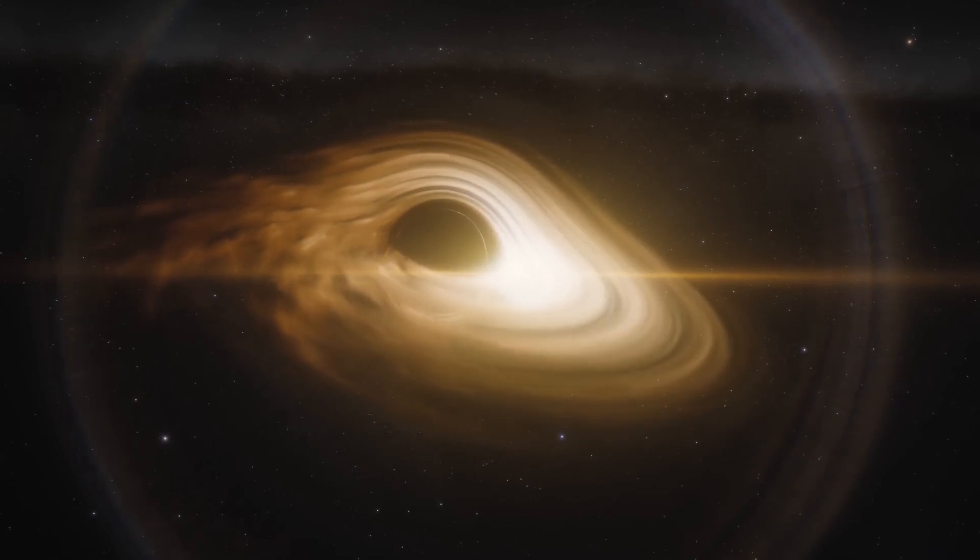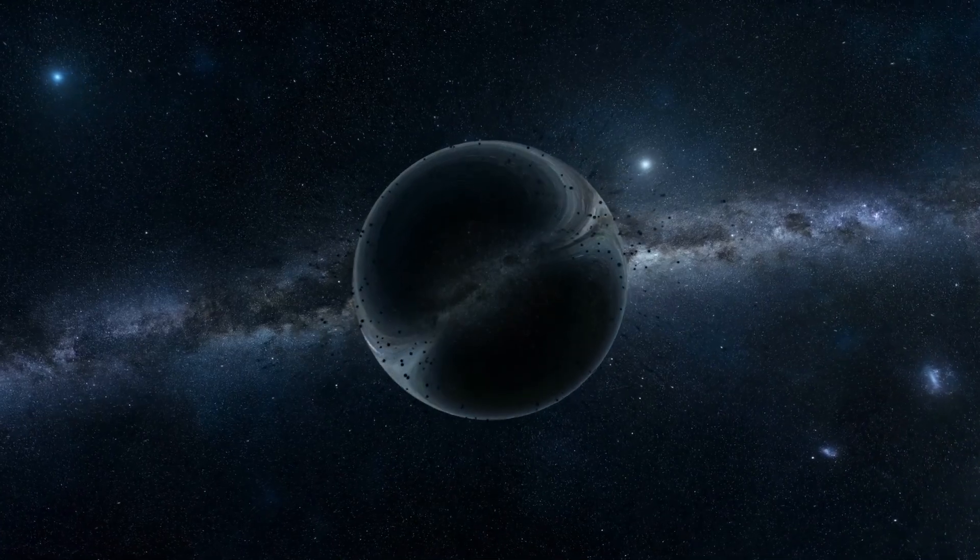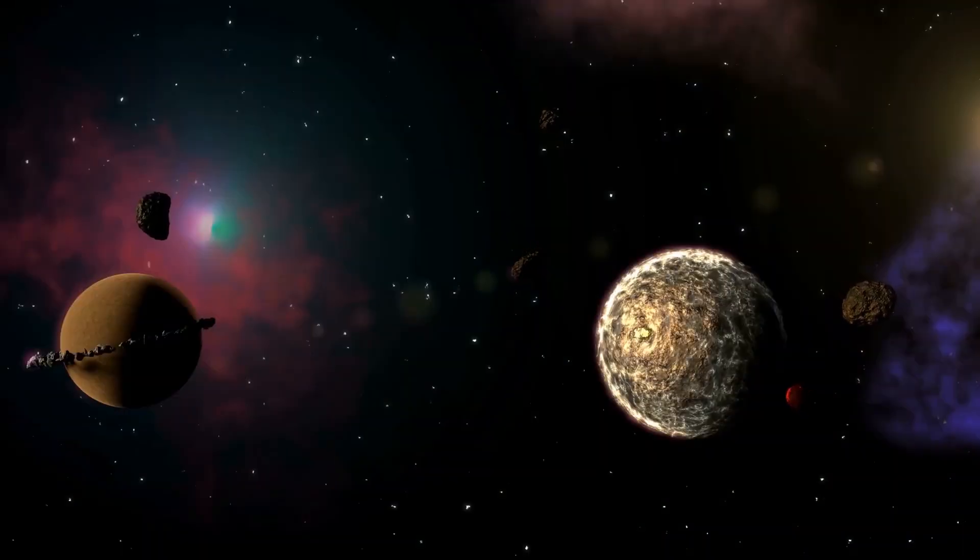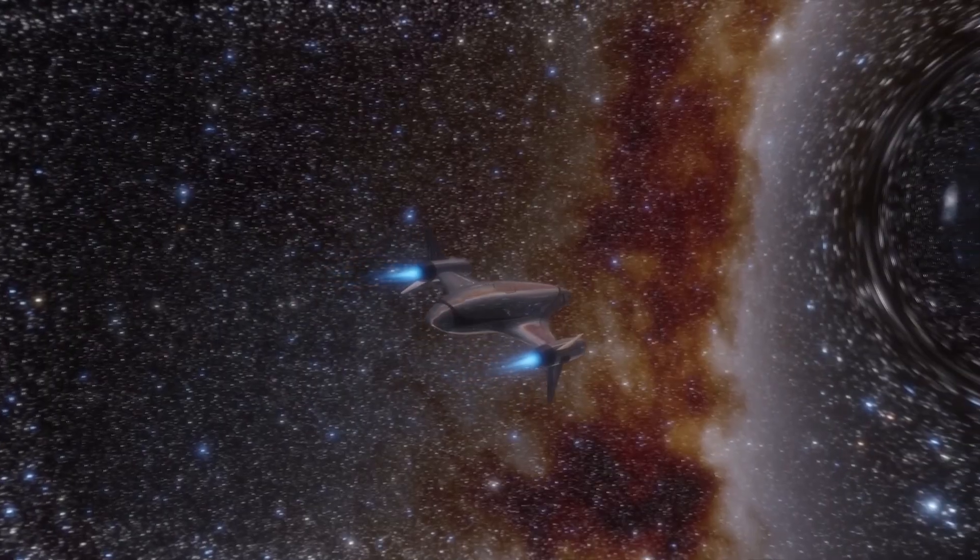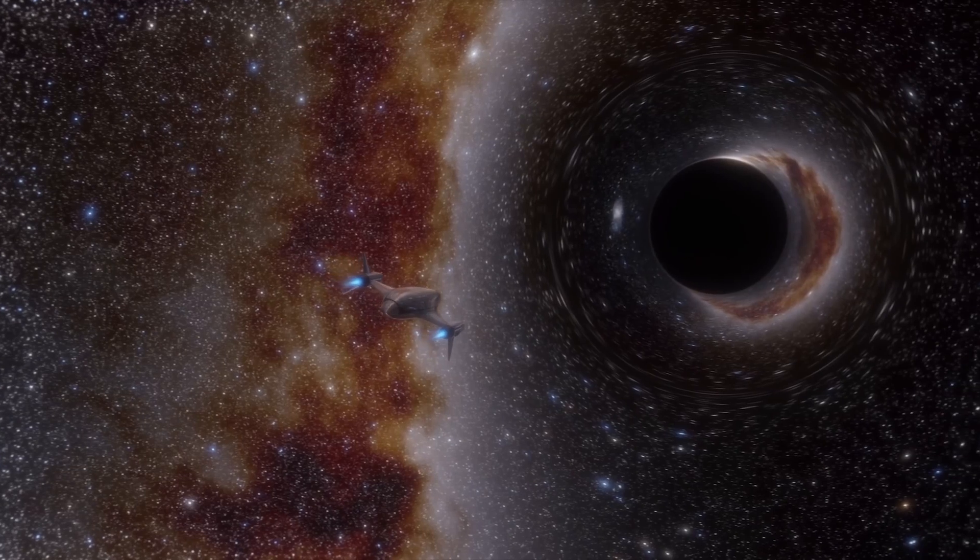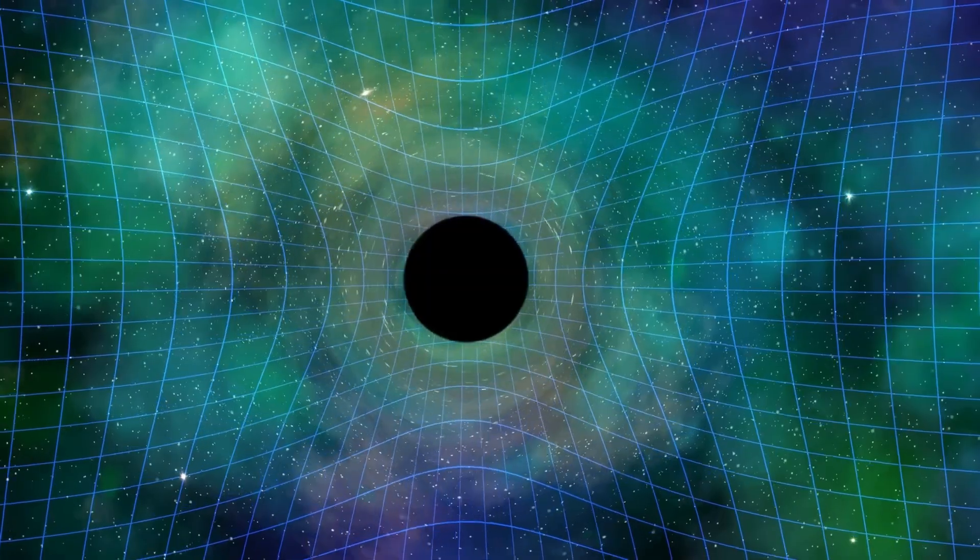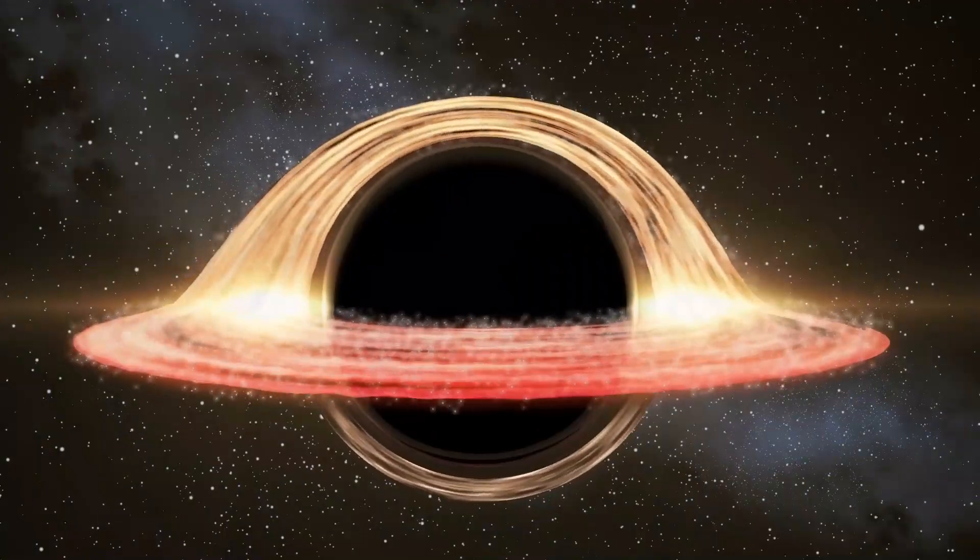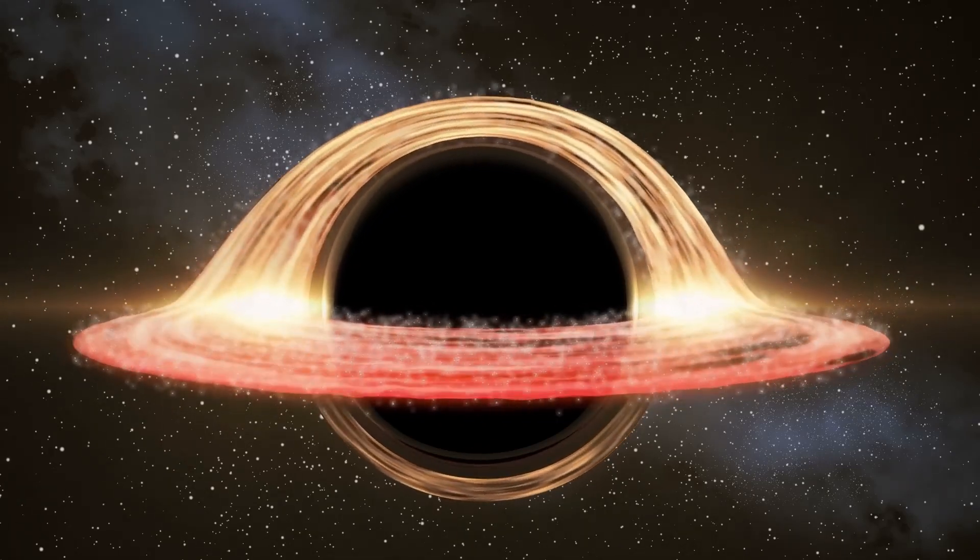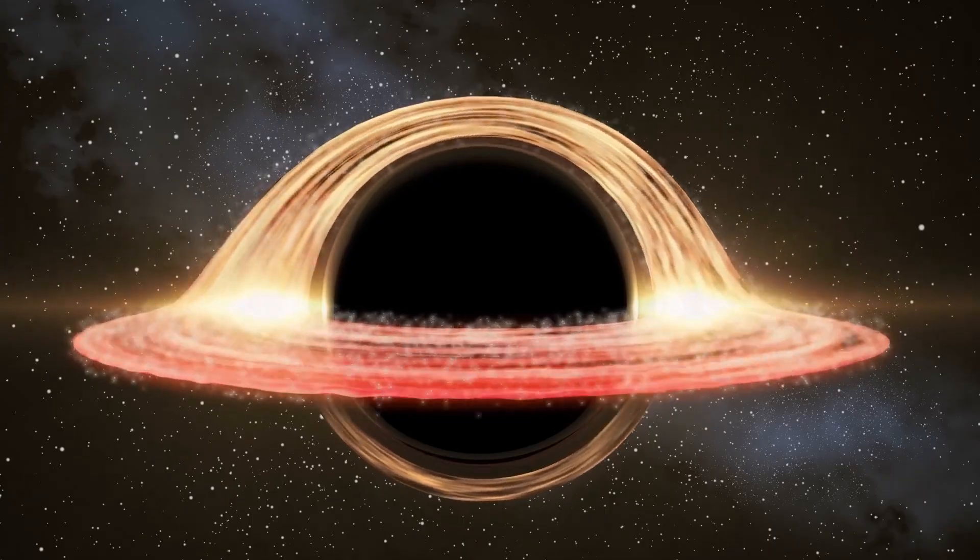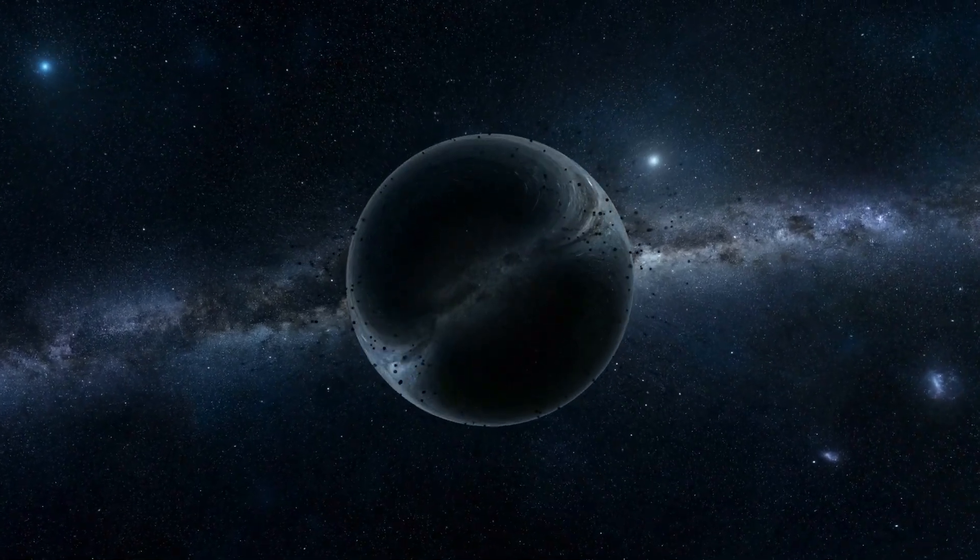However, if a stable Einstein-Rosen bridge existed, it would mean that black holes are not only cosmic devourers, but also portals that could connect us to other regions of space-time. The question then arises whether we could use a wormhole to travel through space and time. Although this is still the subject of speculation and its feasibility has not yet been demonstrated, the theoretical possibility of wormholes opens the door to exploring fascinating concepts about interstellar travel and the connection between different parts of the universe.